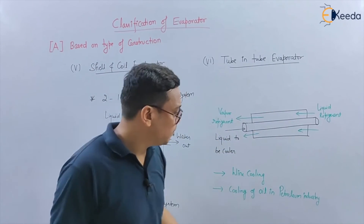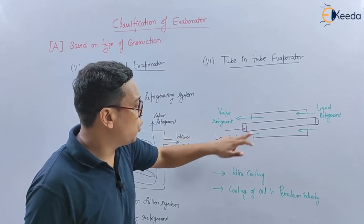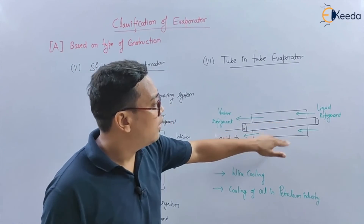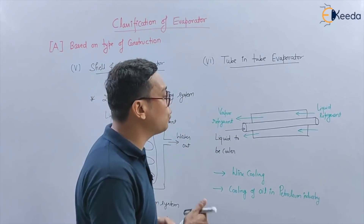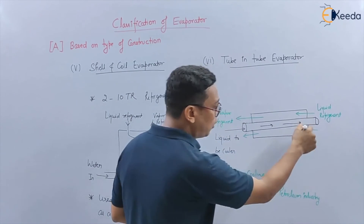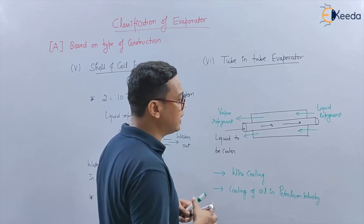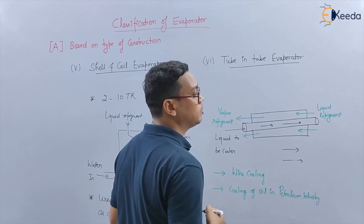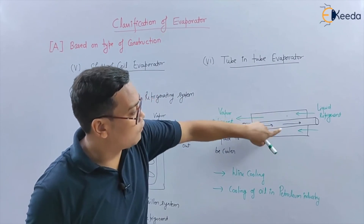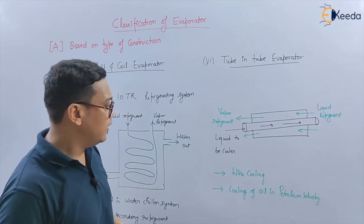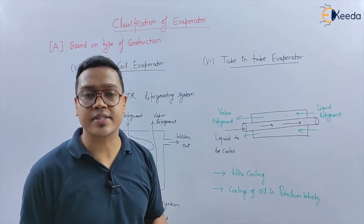In the tube in tube evaporator, there are two tubes — one inner and one outer. The liquid to be cooled flows in the inner tube, and the liquid refrigerant flows in the outer tube. This is an element of counter flow, meaning both fluids flow in opposite directions. There may also be a parallel flow arrangement. This type of evaporator is used in wine cooling and in the petroleum industry.